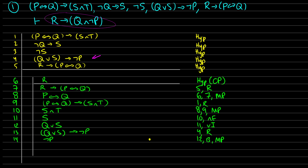I have ¬P now, which is great — that's one of the two conjuncts. Now I have to get Q. I'm not seeing an easy way immediately. But I notice that if I have ¬Q, I get S from line 2, and I also know by assumption I have ¬S. So why don't I just assume ¬Q, find a contradiction, get ¬¬Q out of it, and reduce that to Q using double negation. I'm going to try that.